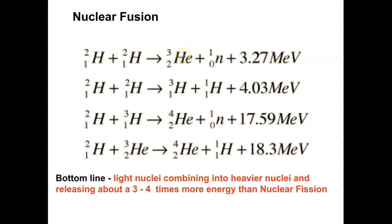Incidentally, we discovered helium on the Sun before we discovered it on Earth, by analyzing the emission light — the bright line spectra — emitted from helium and detecting those wavelengths. But the bottom line remains: the problem is that you need a lot of energy to make fusion work.